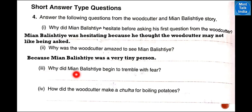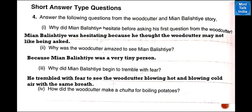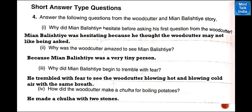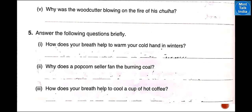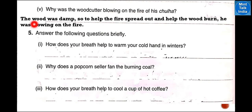Number 3: why did Mian Balishti begin to tremble with fear? He trembled with fear to see the woodcutter blowing hot and blowing cold air with the same breath. Number 4: how did the woodcutter make a chulha for boiling potatoes? He made a chulha with two stones. Number 5: why was the woodcutter blowing on the fire of his chulha? The wood was damp, so to help the fire spread out and increase the supply of air, he was blowing on the fire.